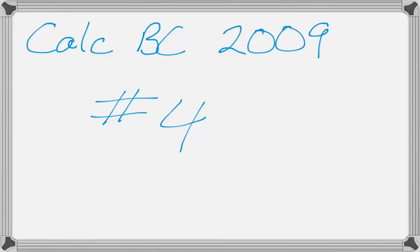Alright, we're going to do number 4 from the 2009 BC exam. It's a differential equation slash Euler method slash Taylor series question. So it's pretty standard Calc BC stuff.